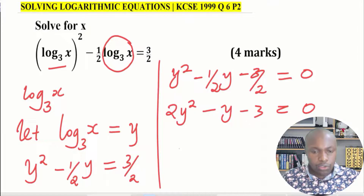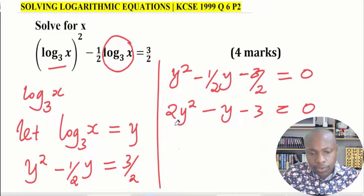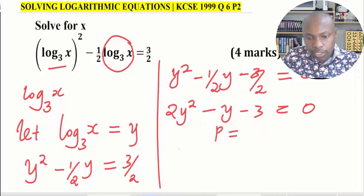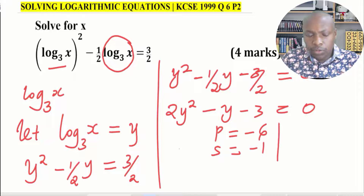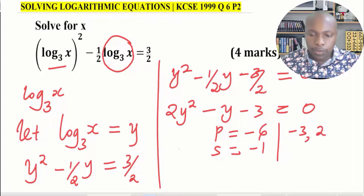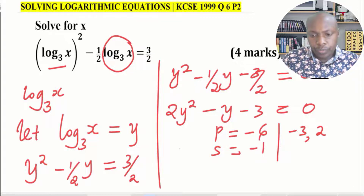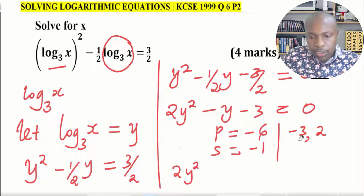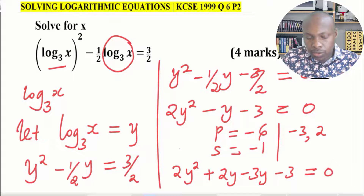You can use any suitable method to solve this quadratic equation. I want to use factorization. I look for two numbers whose product is 2 times negative 3, which is negative 6, and whose sum is the coefficient of y, which is negative 1. Those two numbers are negative 3 and 2, since negative 3 times 2 equals negative 6 and negative 3 plus 2 equals negative 1. So we write 2y squared plus 2y minus 3y minus 3 equals 0.